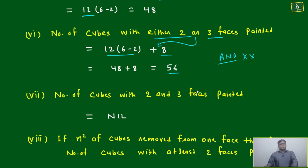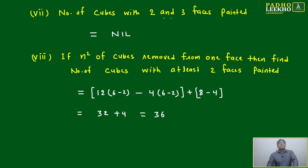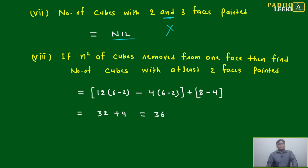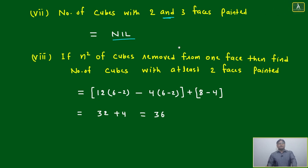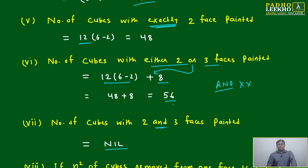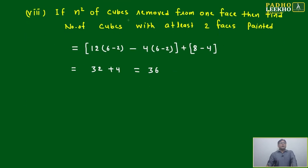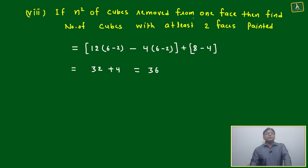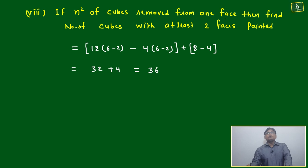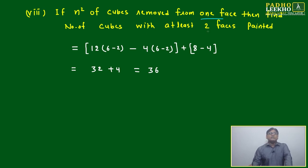Cubes with two and three faces painted together give 56; there is no common cube, so don't multiply — we are not multiplying because there is no overlap. Now an extension problem: if n² cubes are removed from one face, find the number of cubes with at least two faces painted.